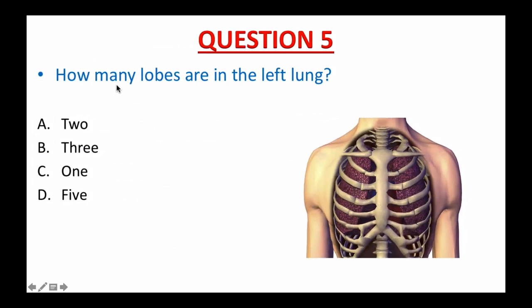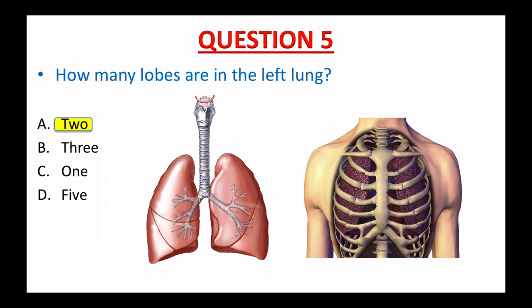Question number five: How many lobes are in the left lung? A. 2, B. 3, C. 1, or D. 5 lobes. If you picked A — two lobes — good for you, you remember. The left lung contains two lobes, while the right lung contains three. This is due to the placement of the heart within the thoracic cavity.